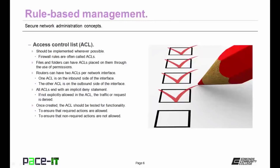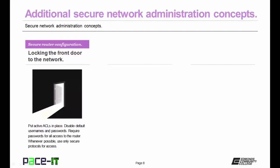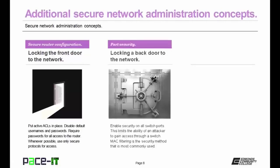Once created, the ACL should be tested thoroughly to ensure that required actions are allowed and non-required actions are not allowed. Now let's move on to some additional secure network administration concepts. The first one is secure router configuration—locking the front door to your network. Put active ACLs in place, disable default usernames and passwords, require passwords for all access to the router, and whenever possible use only secure protocols to access the router.